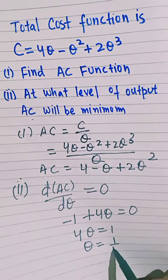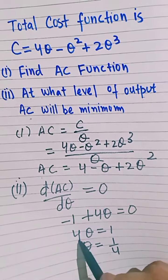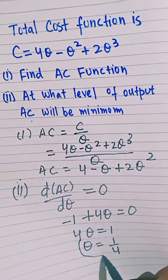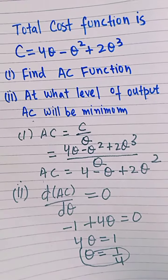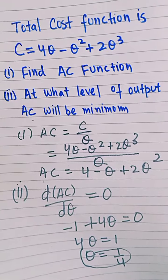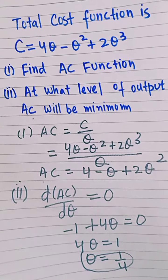When Q = 1/4, the average cost will be minimum. I hope I made myself clear. Thank you.